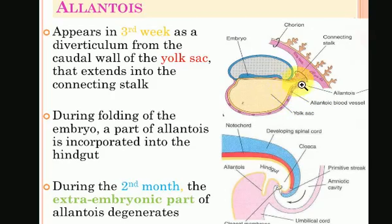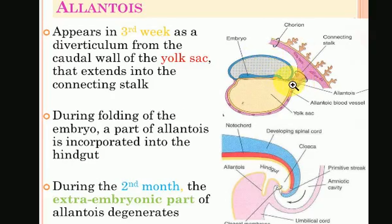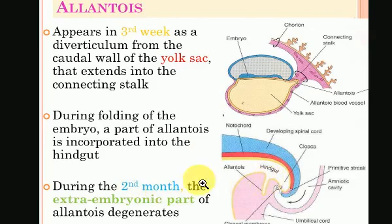The Allantois extends as a diverticulum from the caudal wall of the yolk sac into the connecting stalk. During the folding of the embryo, part of the Allantois is incorporated into the hindgut.